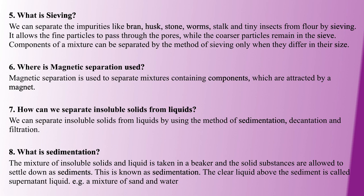Sedimentation: when insoluble solids and liquids are placed in a beaker, the solid substance settles at the bottom of the liquid over time. That settled material is called sediment. The clear liquid above is called the supernatant liquid. For example, in a mixture of sand and water, the sand settles and the water above is the supernatant liquid.